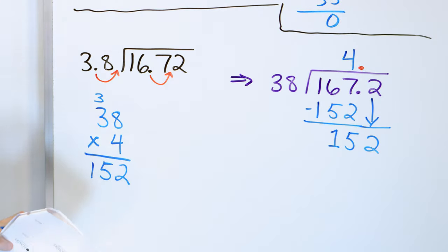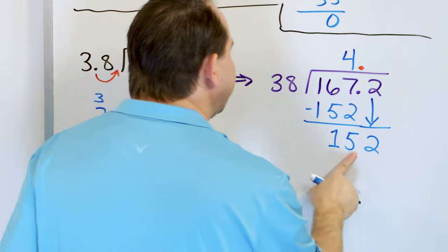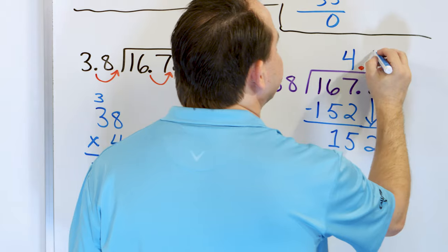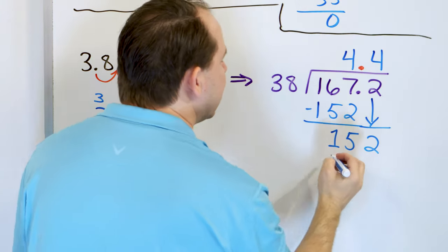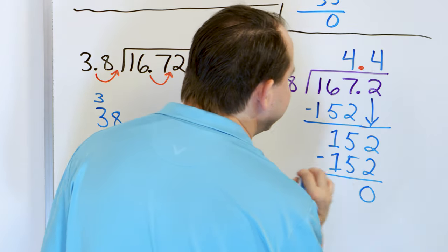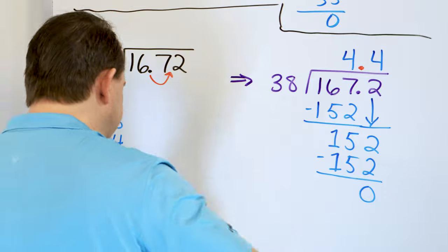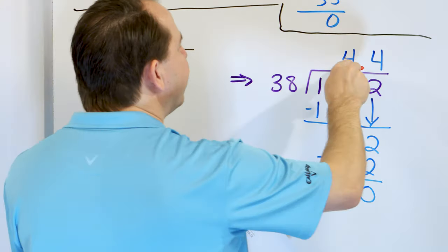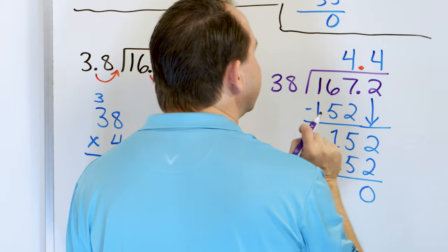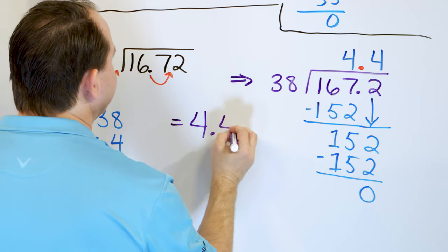Now, 38 times something is 152 — we already know it's exactly 4. So 38 times 4 when we multiply is 152, and we subtract to get 0. There are no more digits to bring down, so the process is done. The answer we got is 4.4 — the decimal just comes straight up, it floats right above. So the answer to this problem is 4.4.